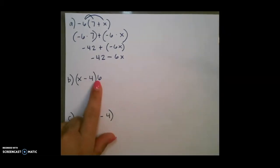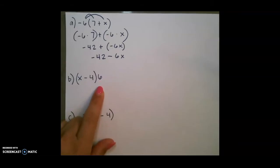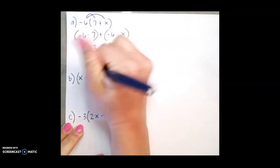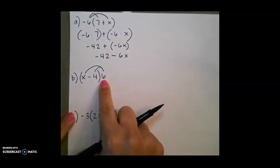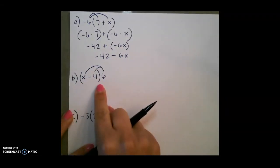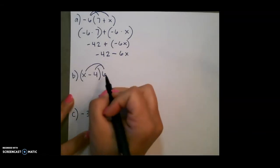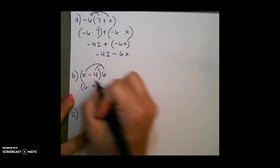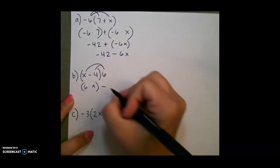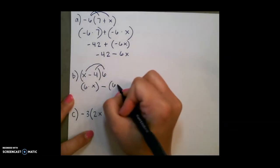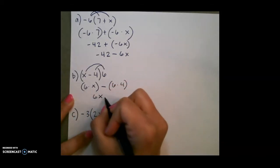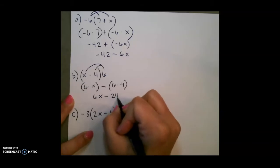For our next example, you will notice that the number is on the other side of the parentheses. You solve this the same way we solved the first one. I'm going to distribute or multiply the number on the outside to everything inside the parentheses. It does not matter which order you go. I'm going to do 6 times x first. There's a subtraction sign in the middle, and then 6 times 4. 6 times x is 6x minus 24.